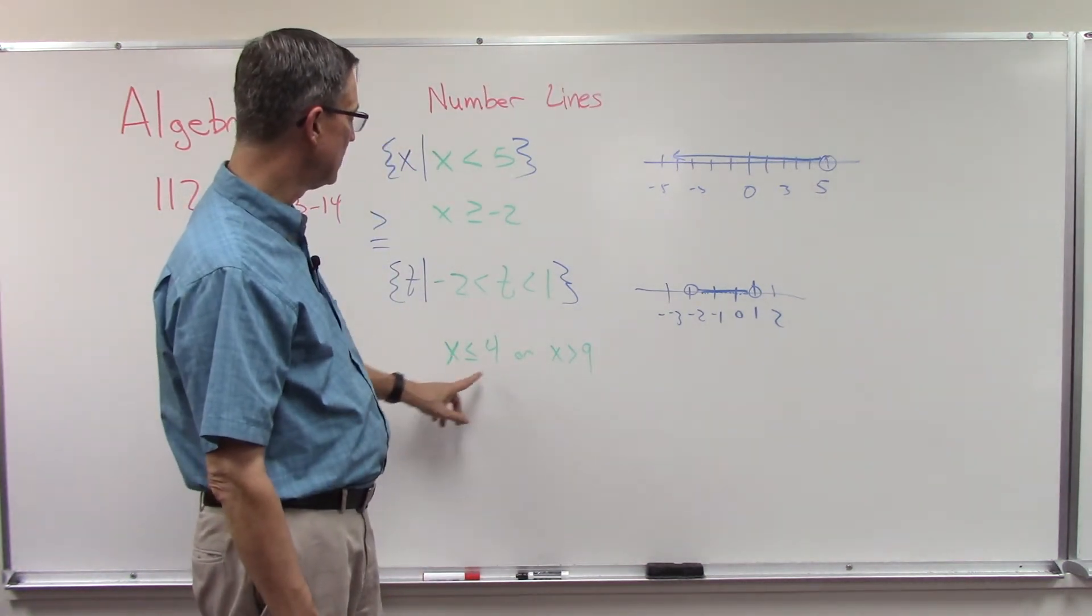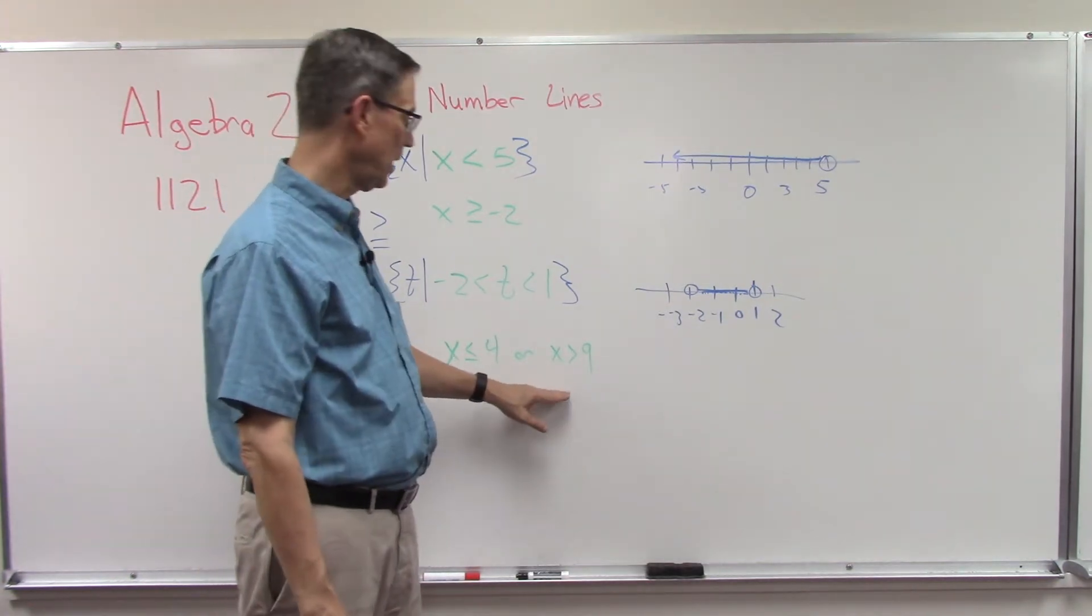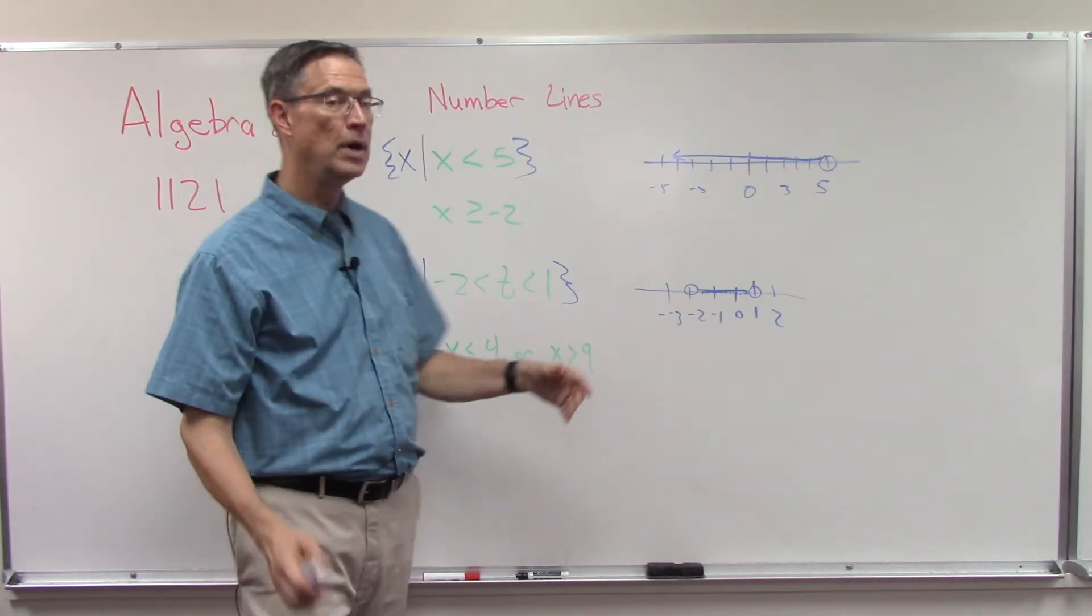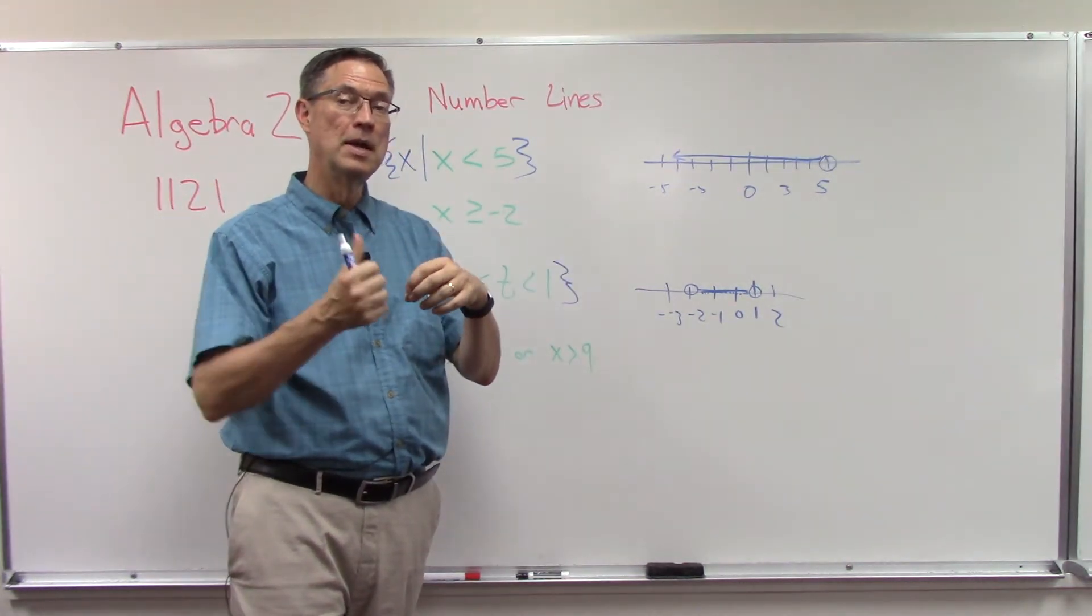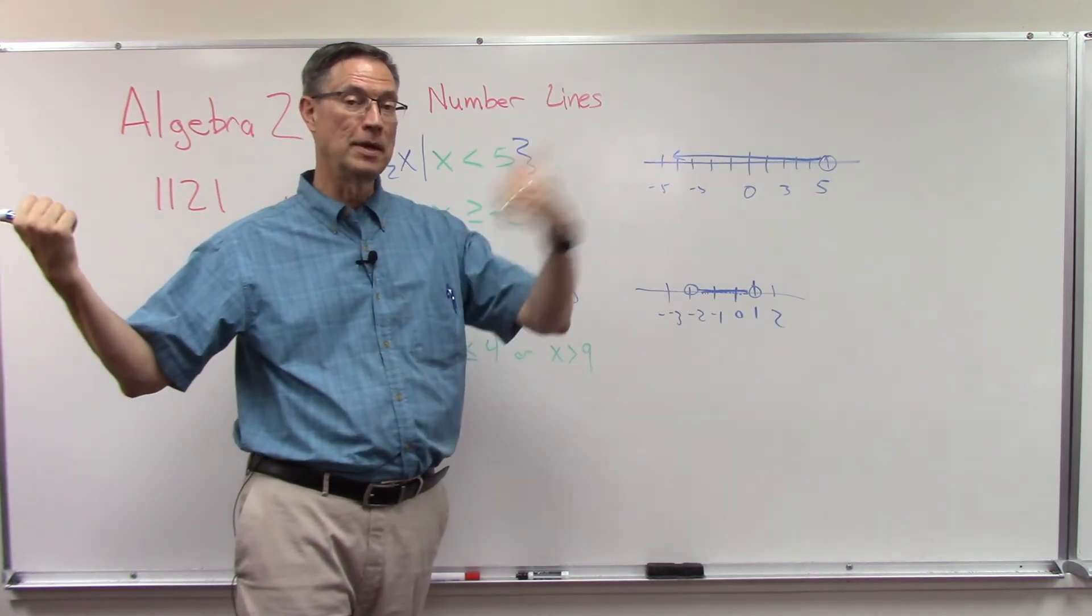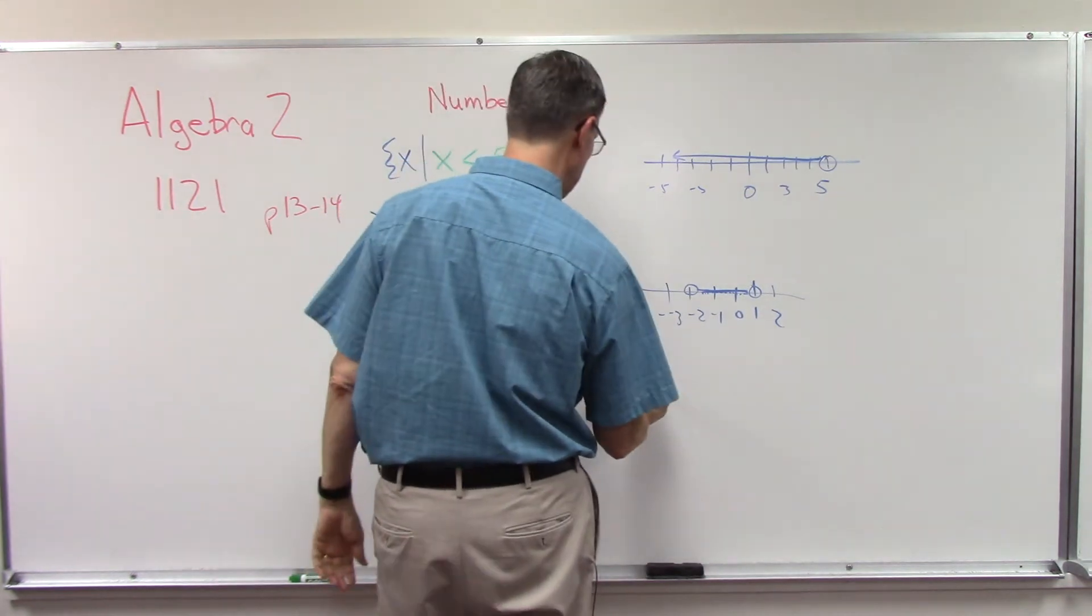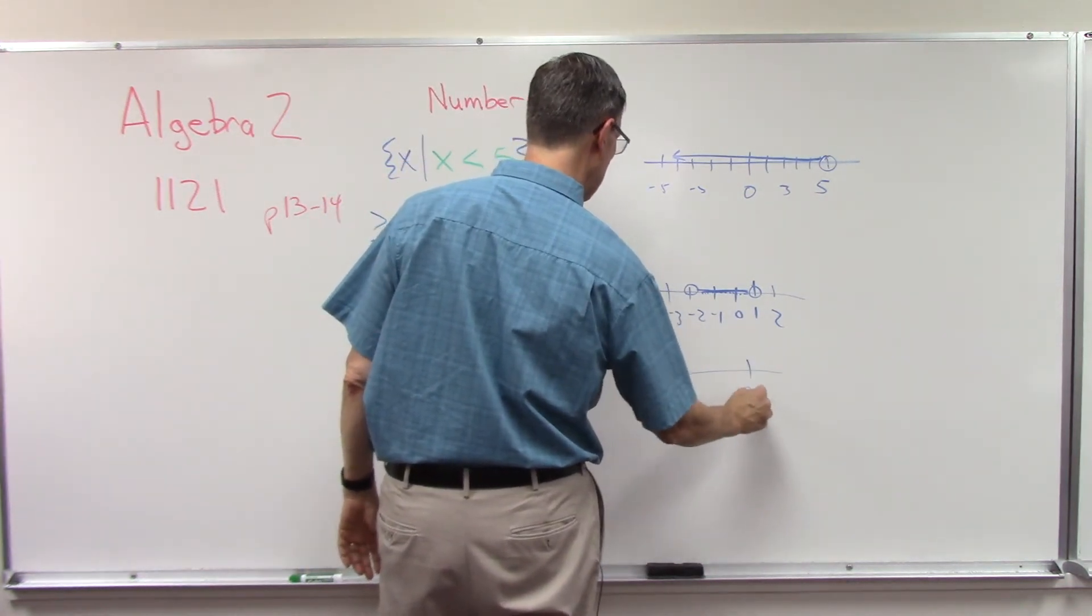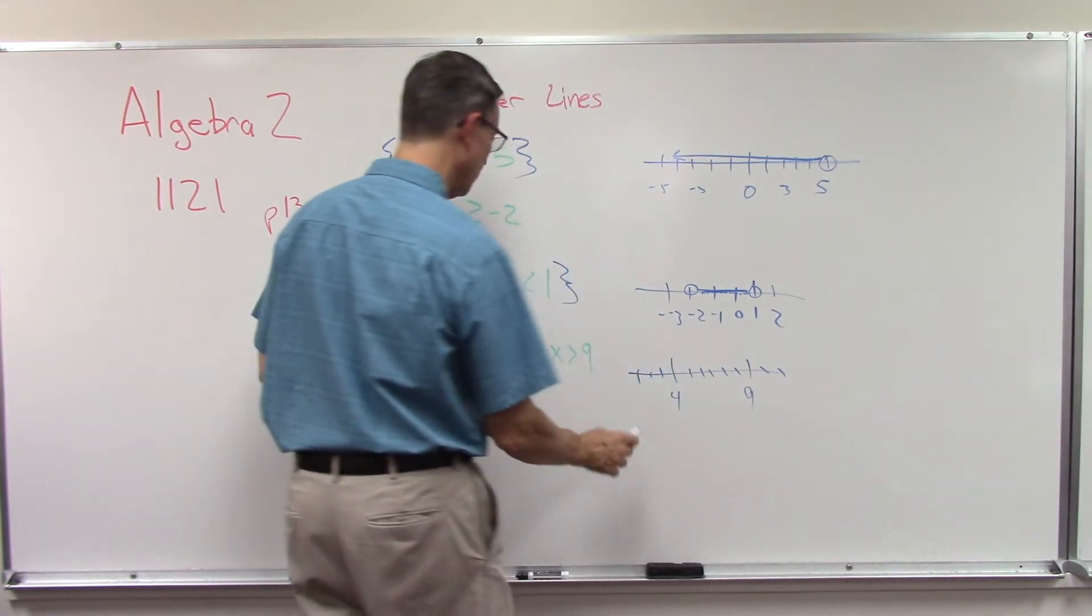Now this one's a little bit different. This one says x is less than or equal to 4 OR x is greater than 9. So this one, there are not going to be numbers between these two. Instead, we have some going this way and some going that way. So an 'or' is going in opposite directions. I'm just going to quick draw the 4, the 9, and we'll pretend like we have other numbers here.